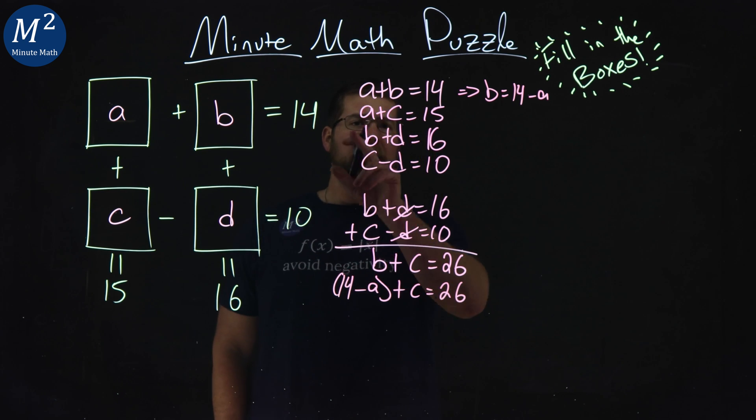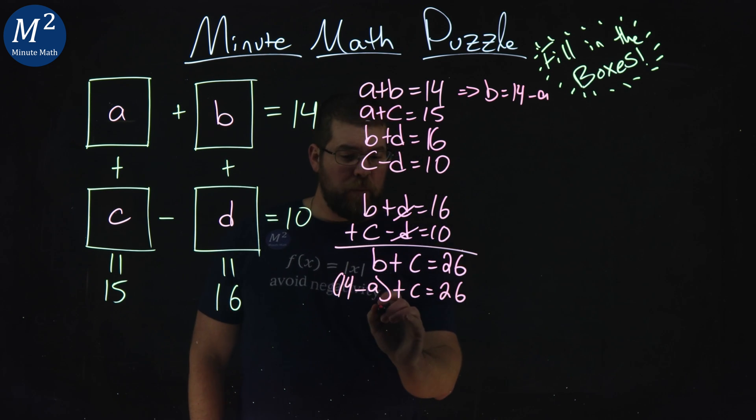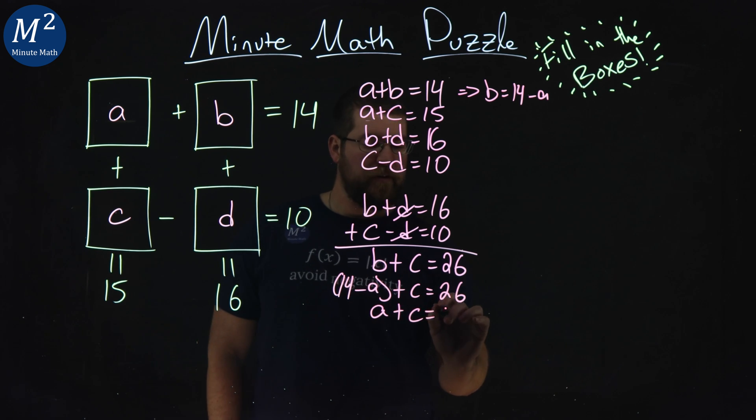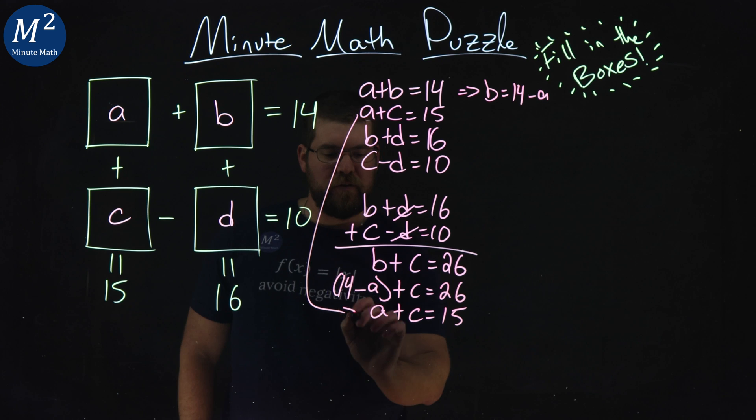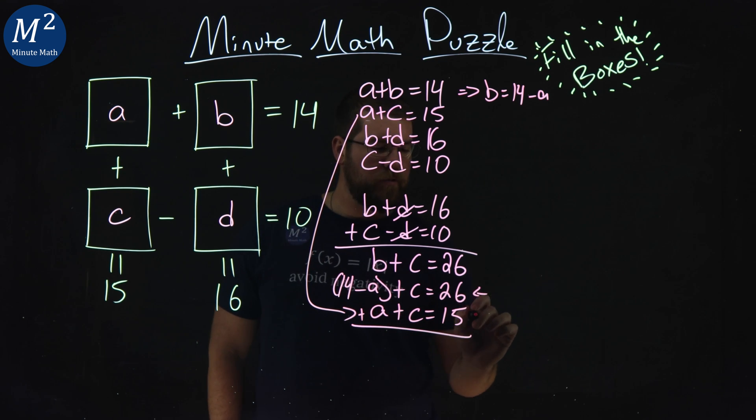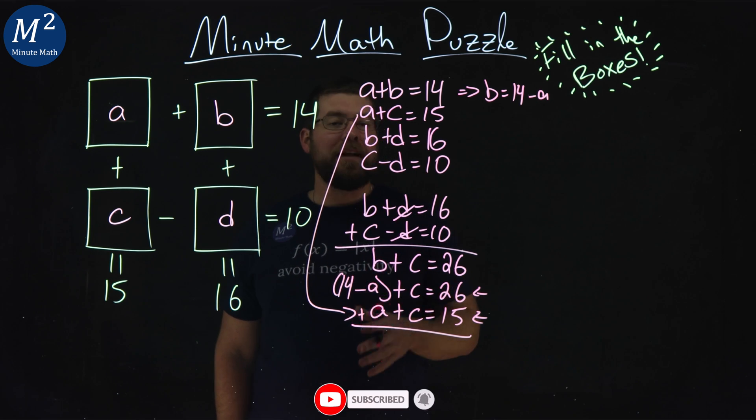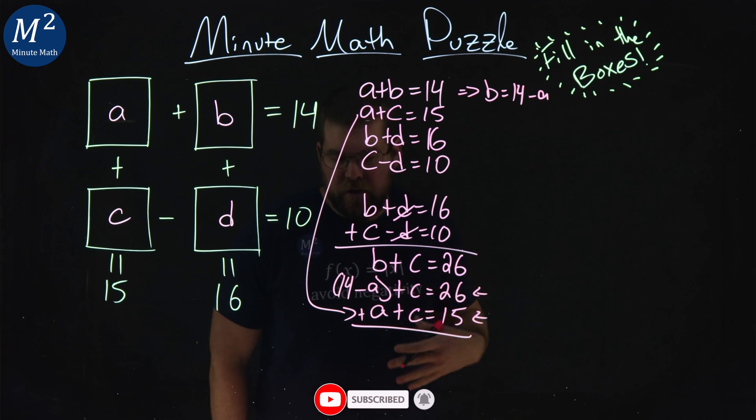Now, if I look at my next equation down here, I have A plus C equals 15. So if I write that below that, A plus C equals 15. Let's bring that down so you can see where I got that here. I'm going to add these two equations right here. I'm doing that because I want my A to cancel, and I will just get a C value left over.